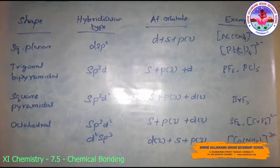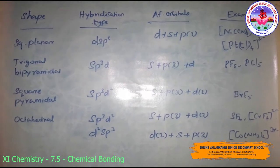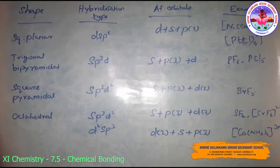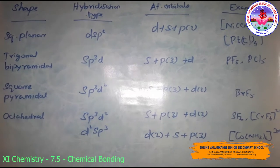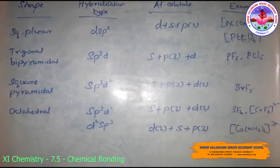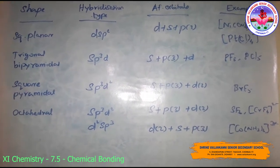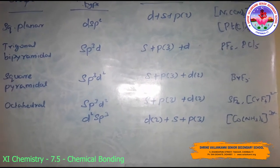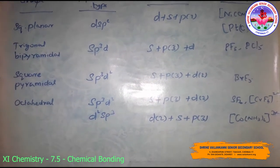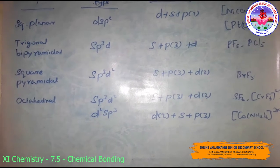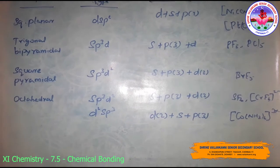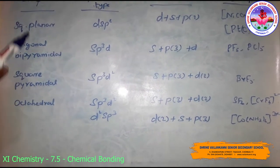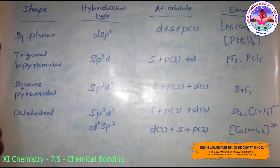Hybridization involving d orbitals occurs in elements of the third period, which contain d orbitals in addition to s and p orbitals. The energy of 3d orbitals is comparable to 3s and 3p orbitals, as well as to 4s and 4p orbitals. Consequently, hybridization involving 3s, 3p, and 3d or 3d, 4s, and 4p is possible. However, hybridization involving 3p, 3d, and 4s orbitals is not possible due to significant energy differences. Important hybridization schemes involving s, p, and d orbitals are summarized in a table.